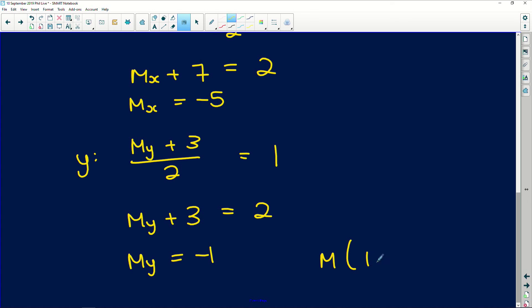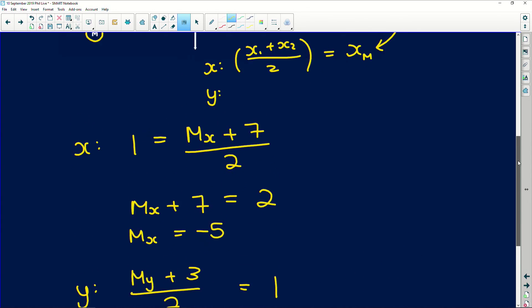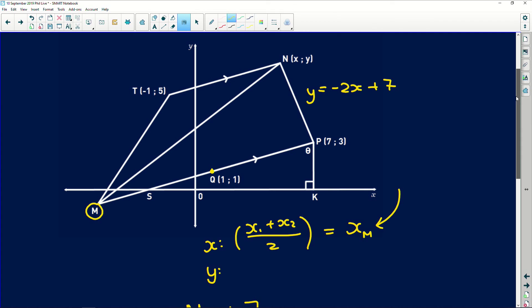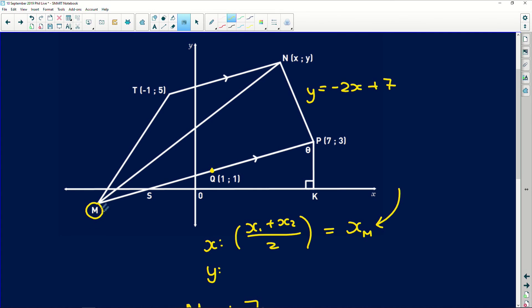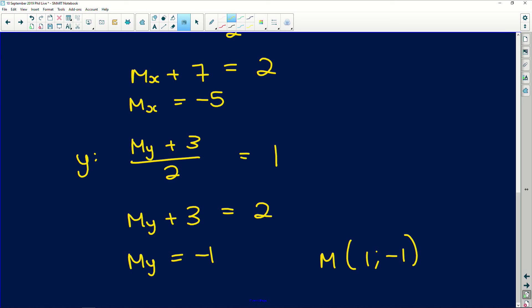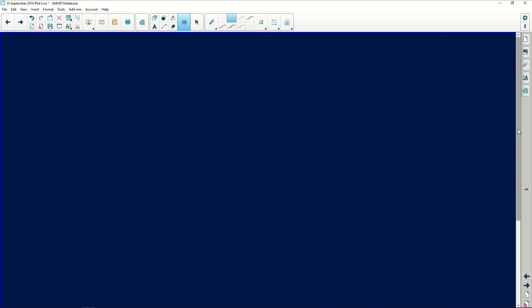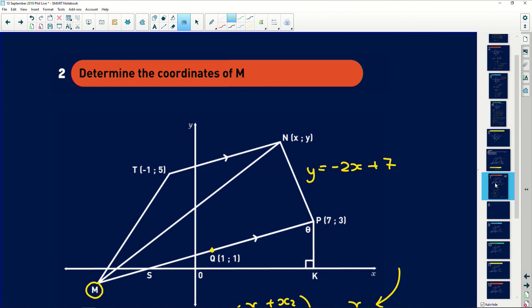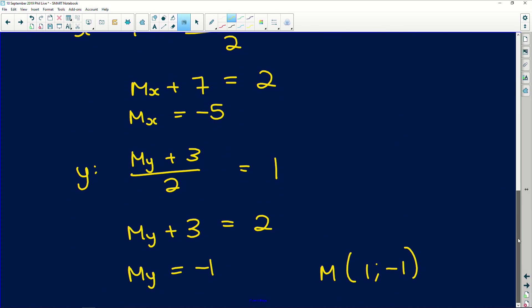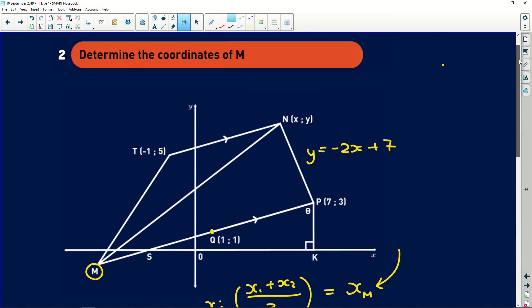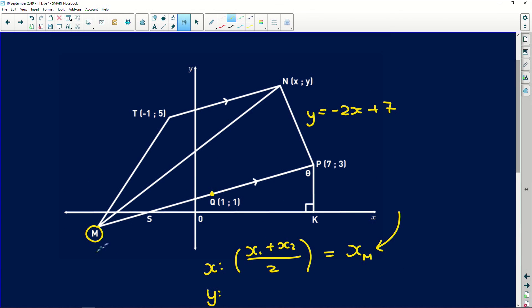If I take the Y value and I add it to the Y value at P, which is 3, and I divide it by 2, I'm going to get a value of 1. The Y value at M plus 3 is equal to 2, if we multiply both sides by 2, which means that the Y value at M is equal to 2 minus 3, which is negative 1. M sits at 1 and negative 1. If we go and look at this point, it makes sense. But I'm talking absolute rubbish. It's not 1 down here. Whoopsie. I'm talking absolute rot. I'm looking at this number here, but that's rubbish. The X value is negative 5. Negative 5 and negative 1.